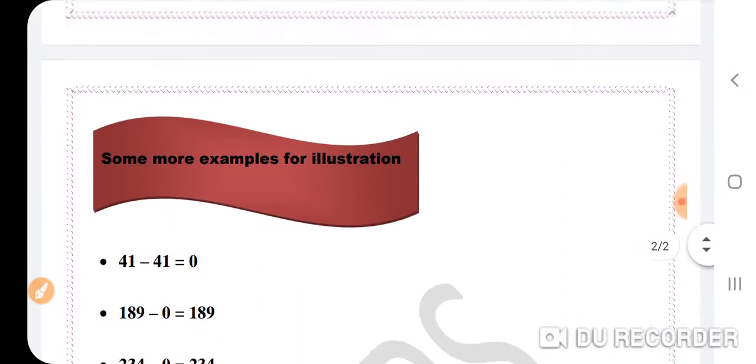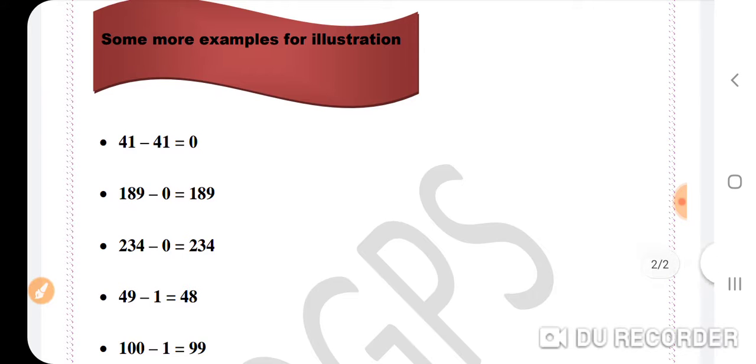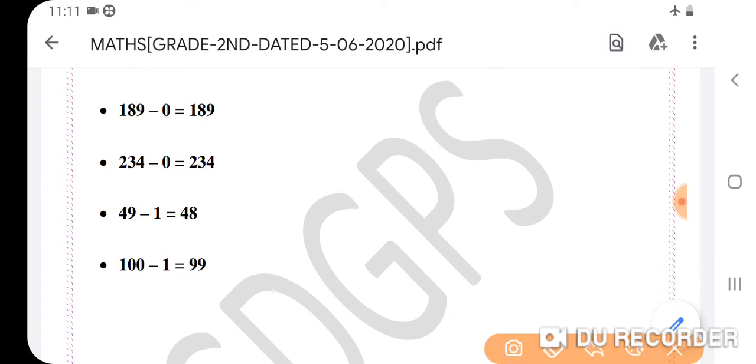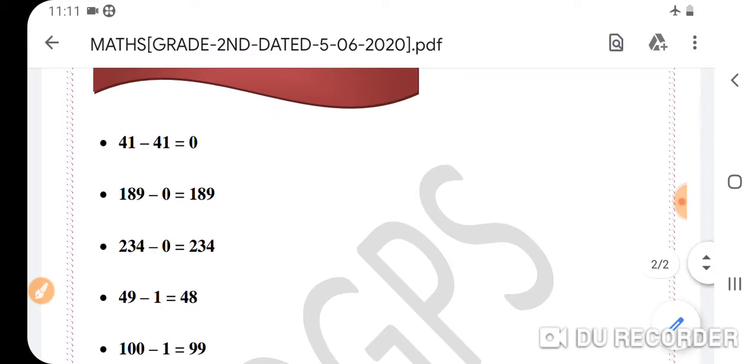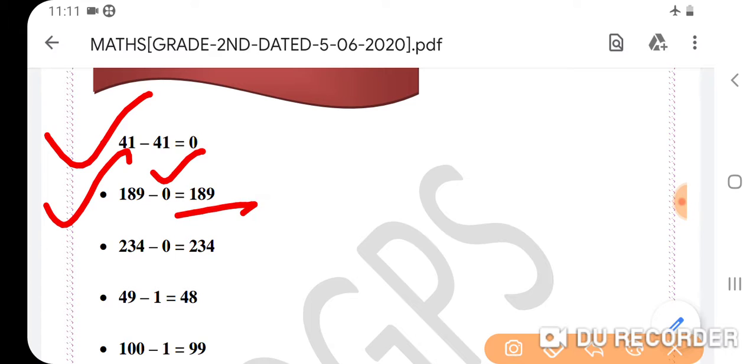Now dear Goinkans, let us see some more examples for illustration. Example 1: 41 minus 41 equals 0. Here everything has been taken away. Example 2: 189 minus 0 equals 189. Nothing has been taken away, so the difference is 189.